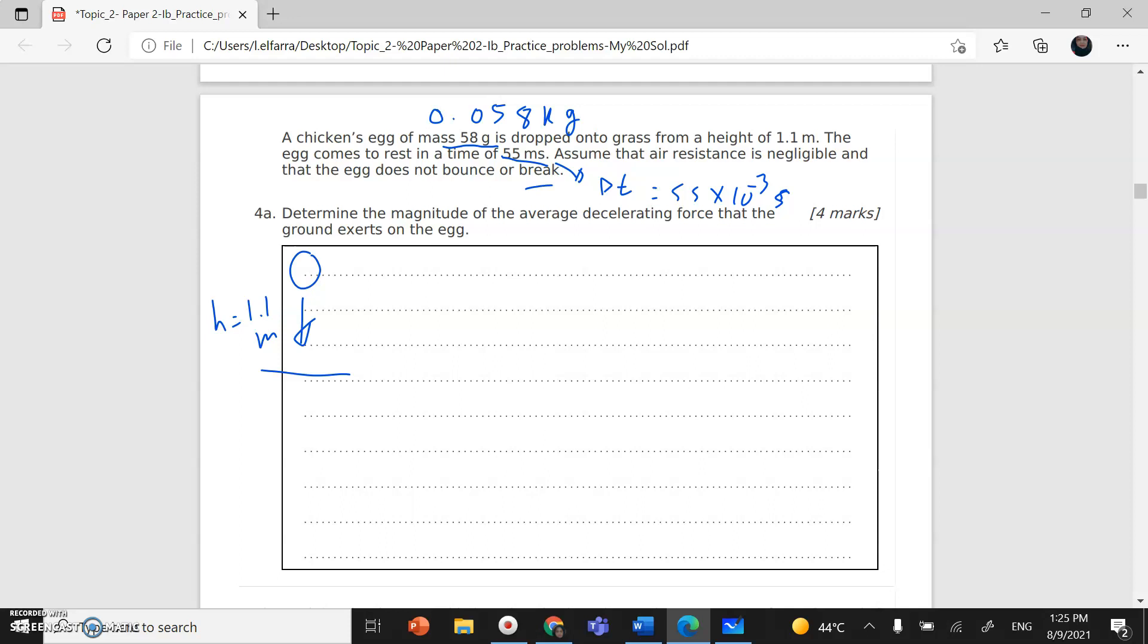Determine the magnitude of the average decelerating force that the ground exerts on the egg. Now what are the forces acting? If I assume that I don't have air resistance, it will be the weight of the egg, which equals mass times gravity. The egg is accelerating downward. I'm going to solve this question using two methods.